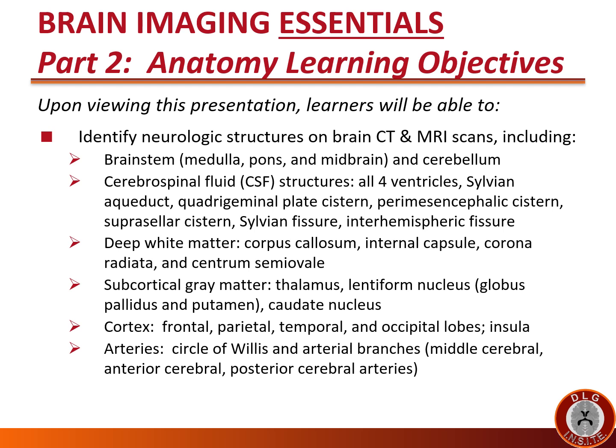The subcortical gray matter — including the thalamus and lentiform nucleus, which consists of the globus pallidus, putamen, and the caudate nucleus — as well as the cerebral cortex: frontal, parietal, temporal, and occipital lobes, and the insula.